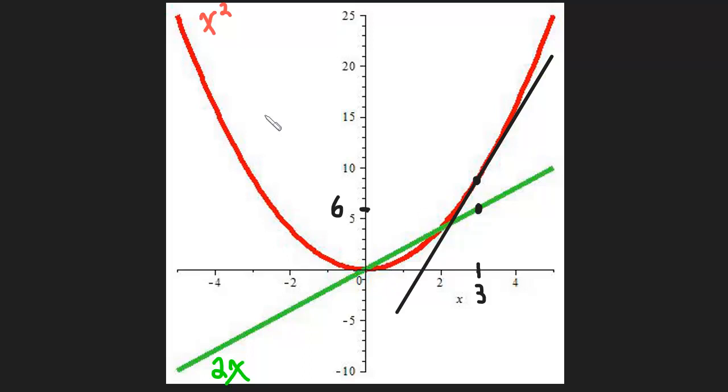So that 6 means the slope of the tangent line. Let me get a thinner brush here. The slope of tangent is 6 when x is 3. I'll just write x equals 3. So when x is 3, the slope of the tangent line to the original function is 6.